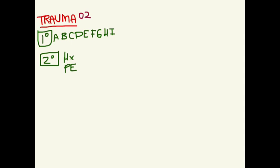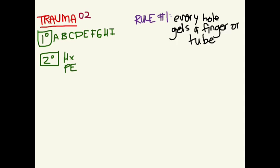Let me give you rule number one of your trauma evaluation. Every hole gets a finger or a tube in it. This means make sure that you look at everything. Look inside the ears for hemotympanum. Look at the urethra for any bleeding. Do a rectal exam. Remember to look inside the mouth, nose, and vagina. Look inside every hole that you can find.